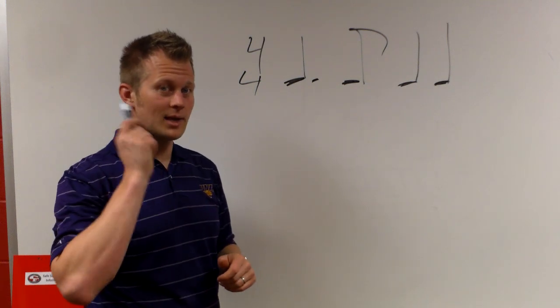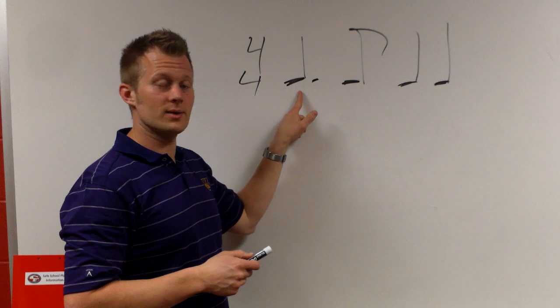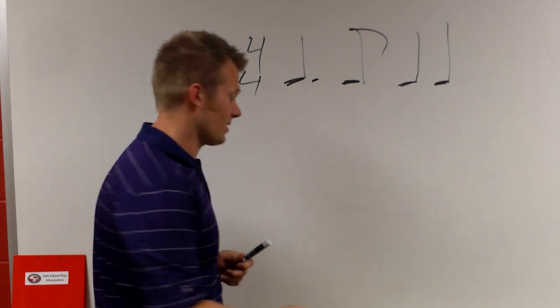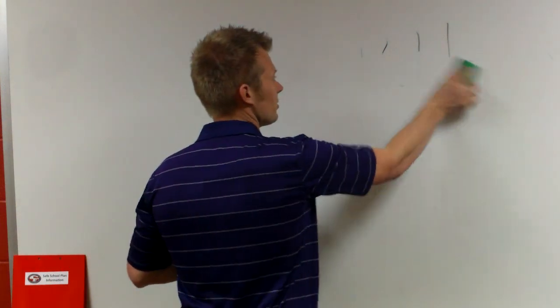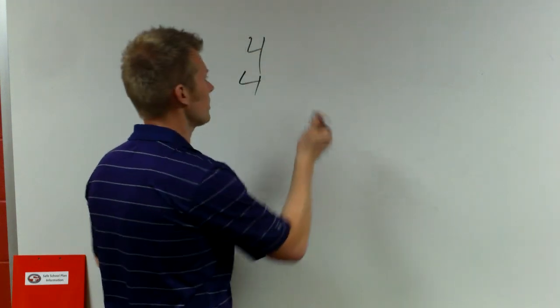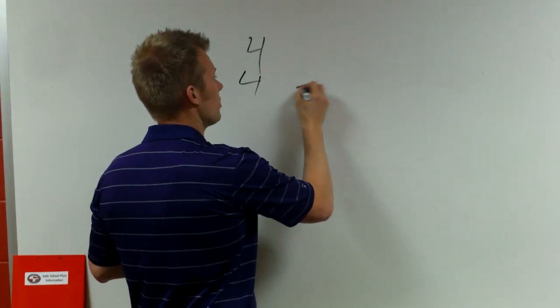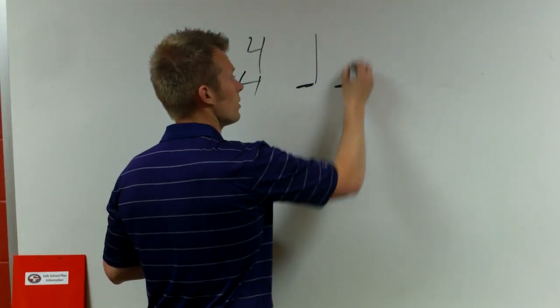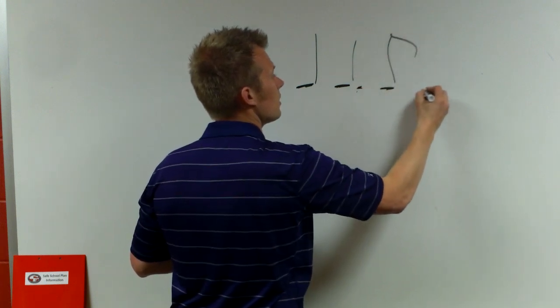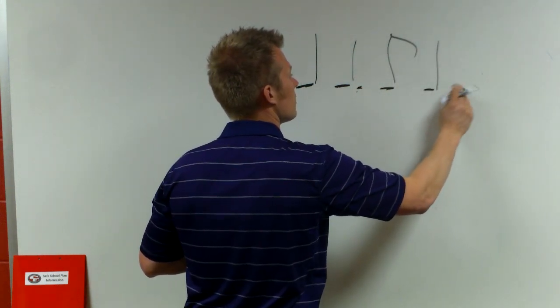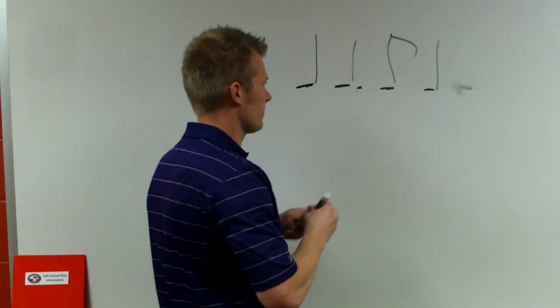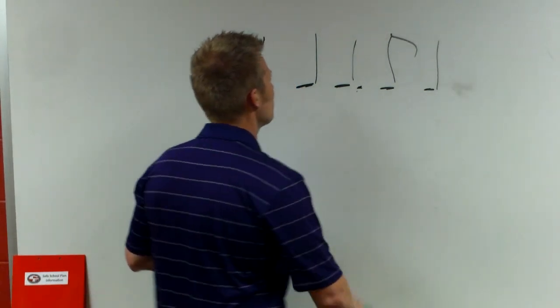The key to this is subdividing in your head one and two and. Okay? Now let's mix it up just a little bit. What if we put the dotted quarter note on beat two?